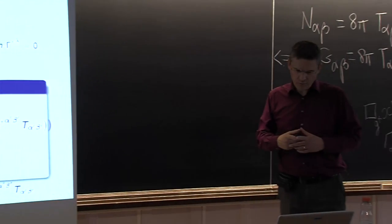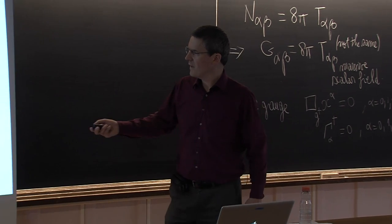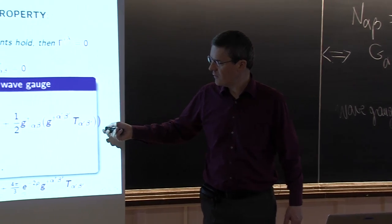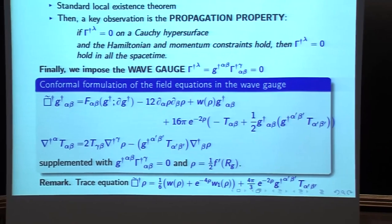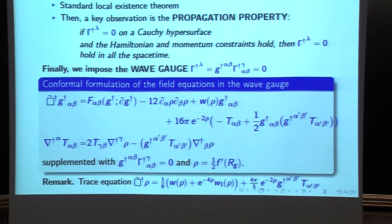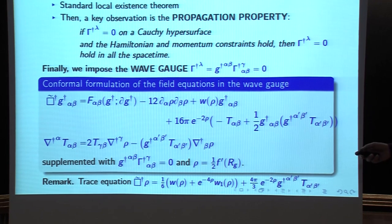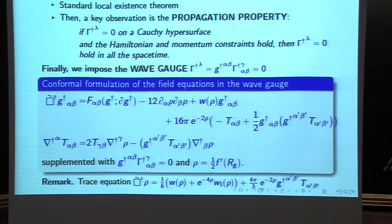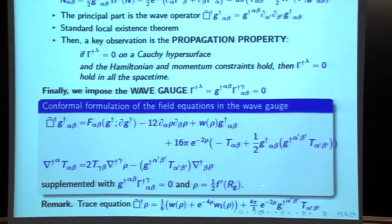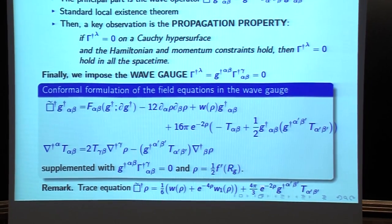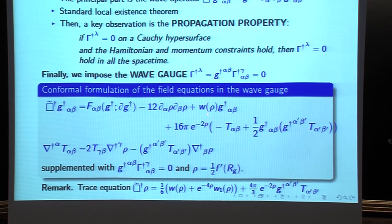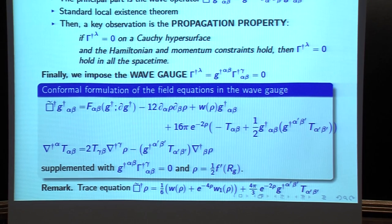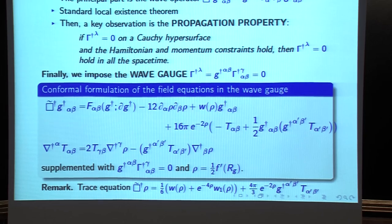There is one more point: there is a trace equation, Box̃(ρ), which you can also obtain as part of the previous calculation. In the rest of the discussion, I will use this equation. It's not needed at this moment, but in a second this equation for the trace will be very important. So now we are going to introduce an augmented variable — we will define a bigger system where the unknowns will not only be the metric and the matter fields, but also include this function ρ.